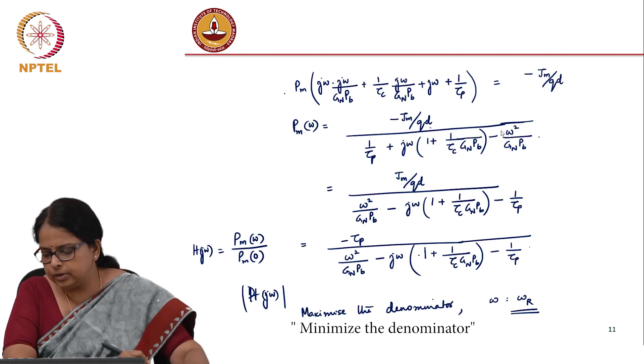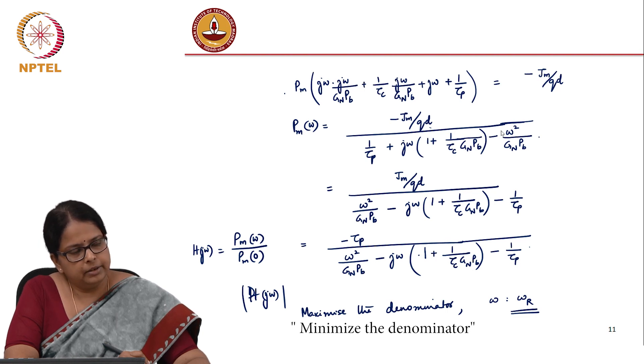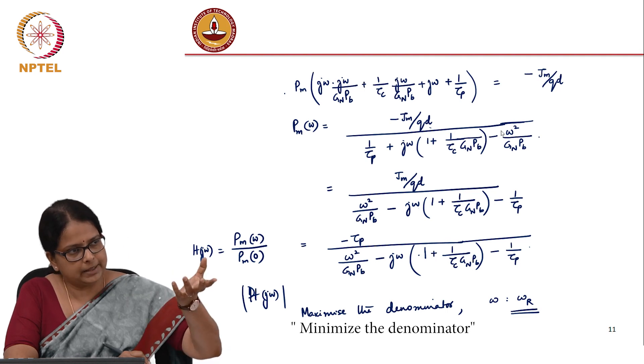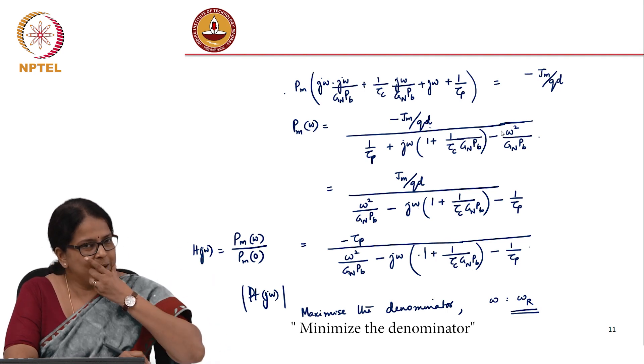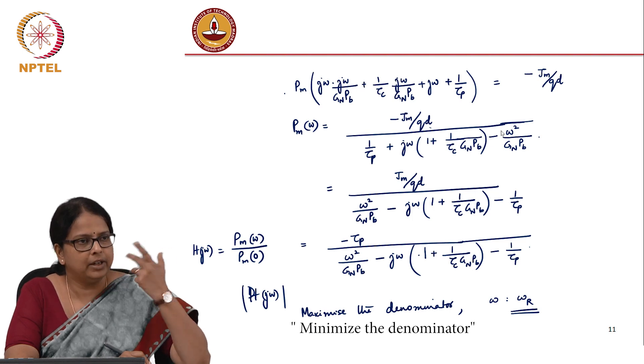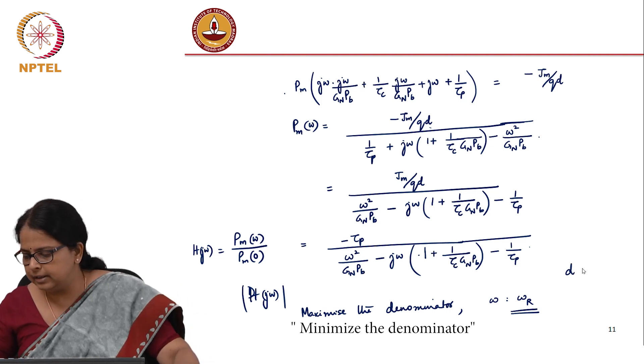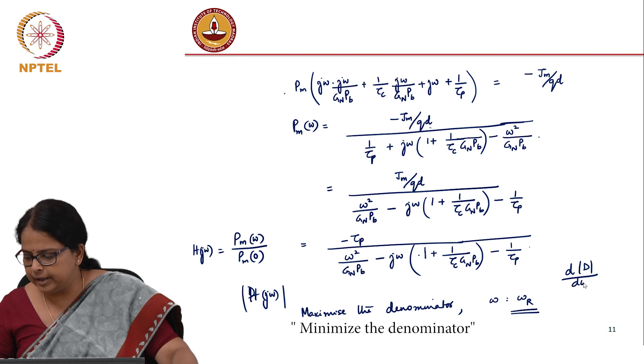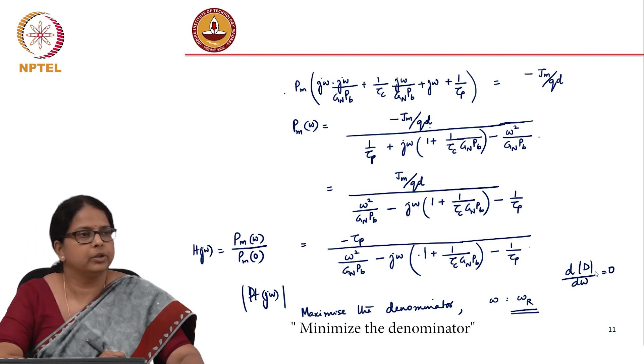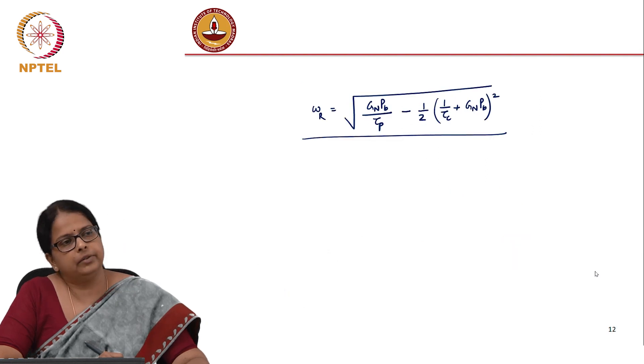I will repeat. What you need to do is: you have the transfer function, find the modulus of the transfer function, you get a denominator and you want the transfer function to be maximum which means the denominator has to be minimum. To find at what frequency that's happening, you take the first derivative. Derivative of the denominator divided by d*omega equal to zero. Do that and you will get this resonant frequency.